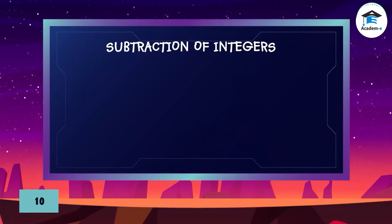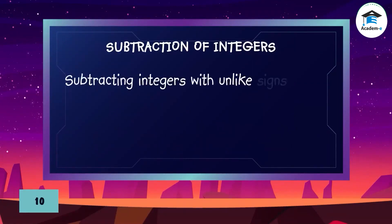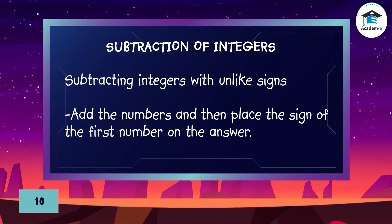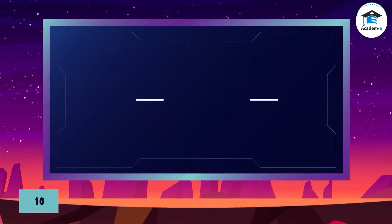Subtraction of integers — subtracting integers with unlike signs: add the numbers and then place the sign of the first number on the answer. Examples follow.